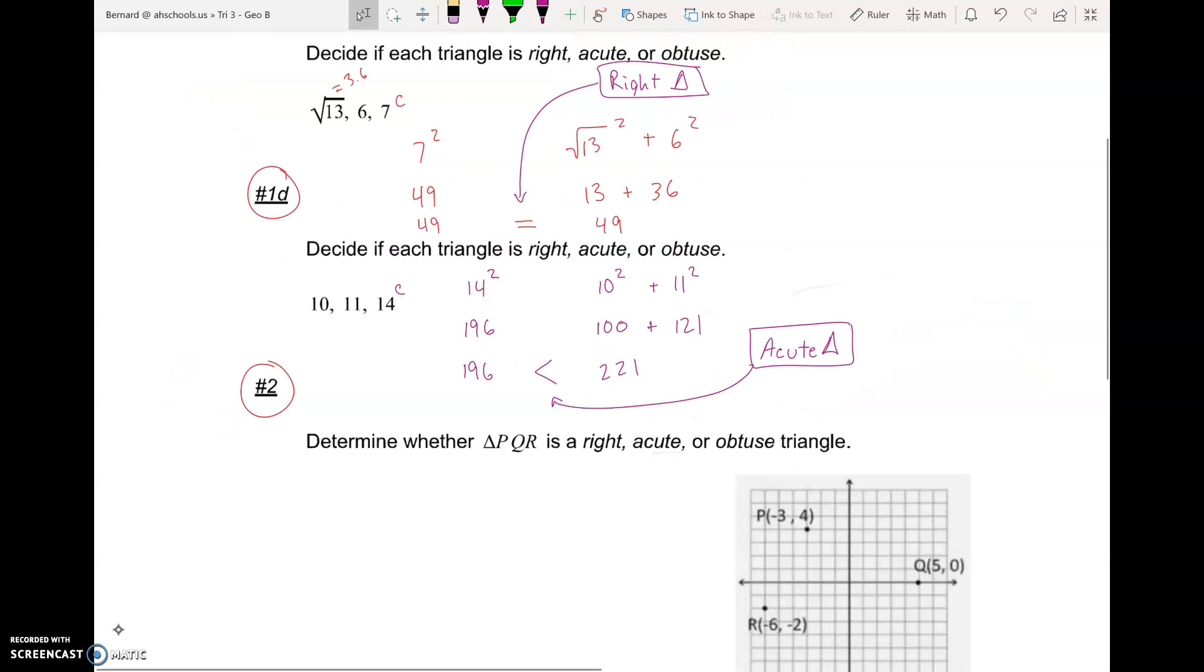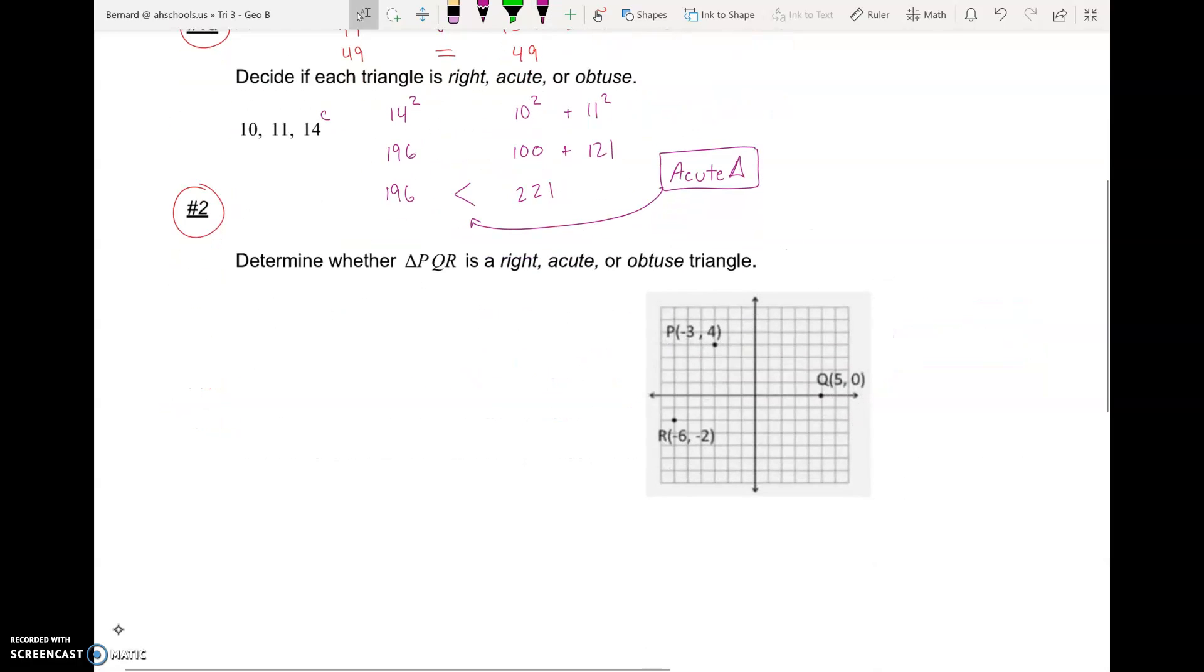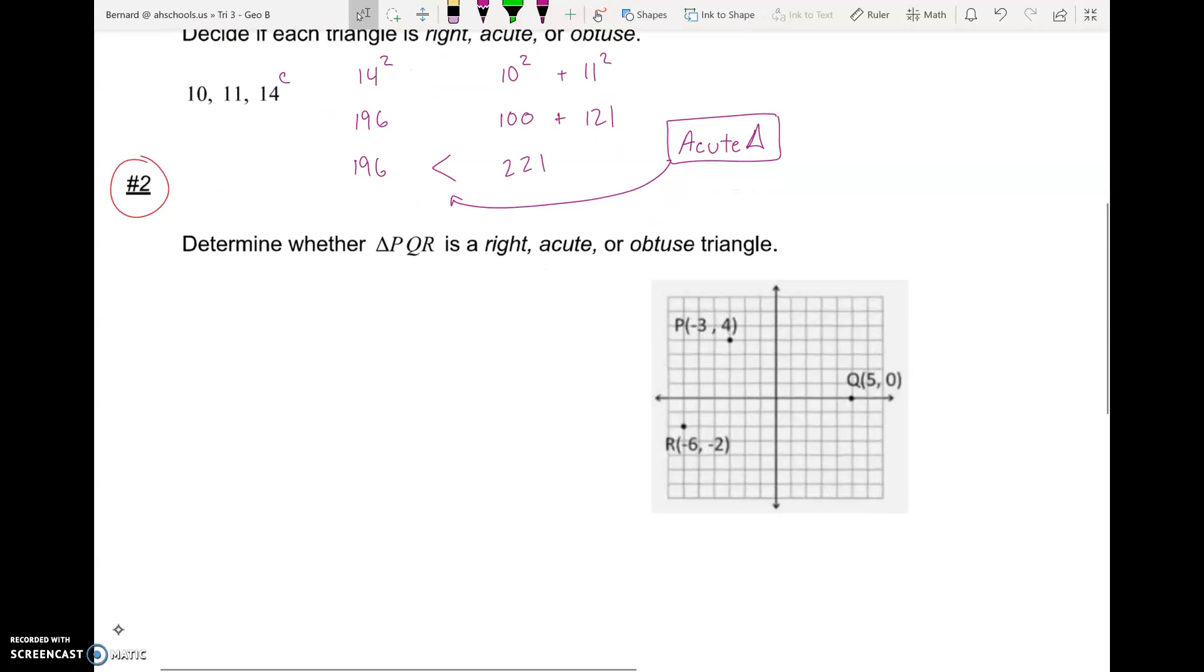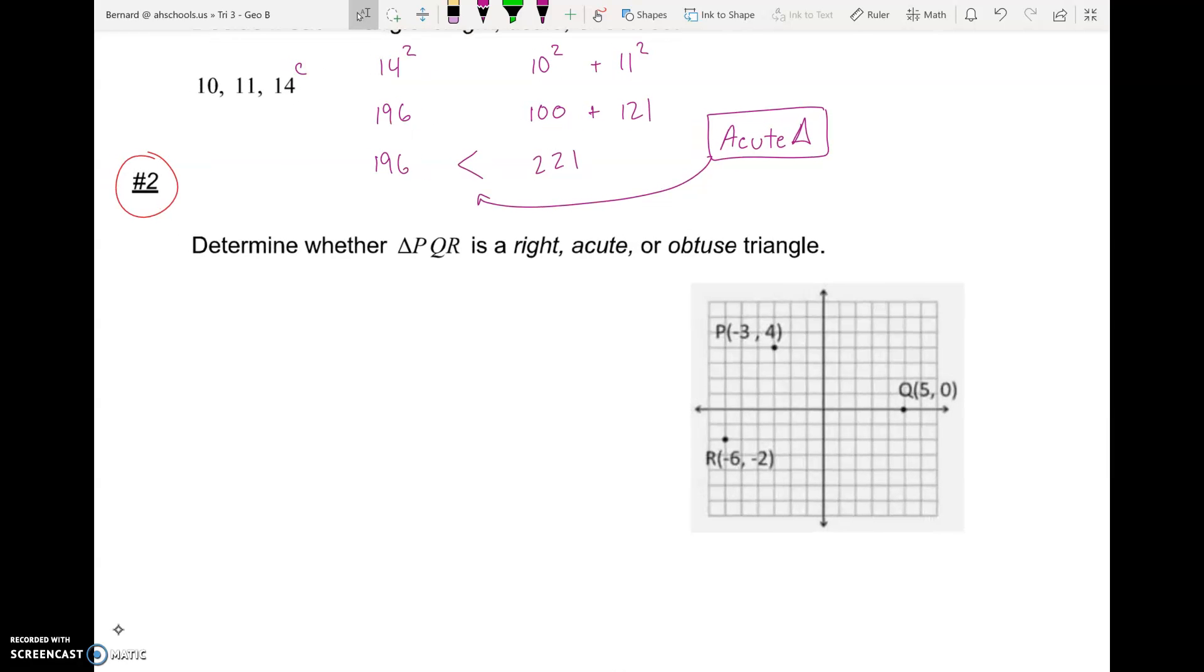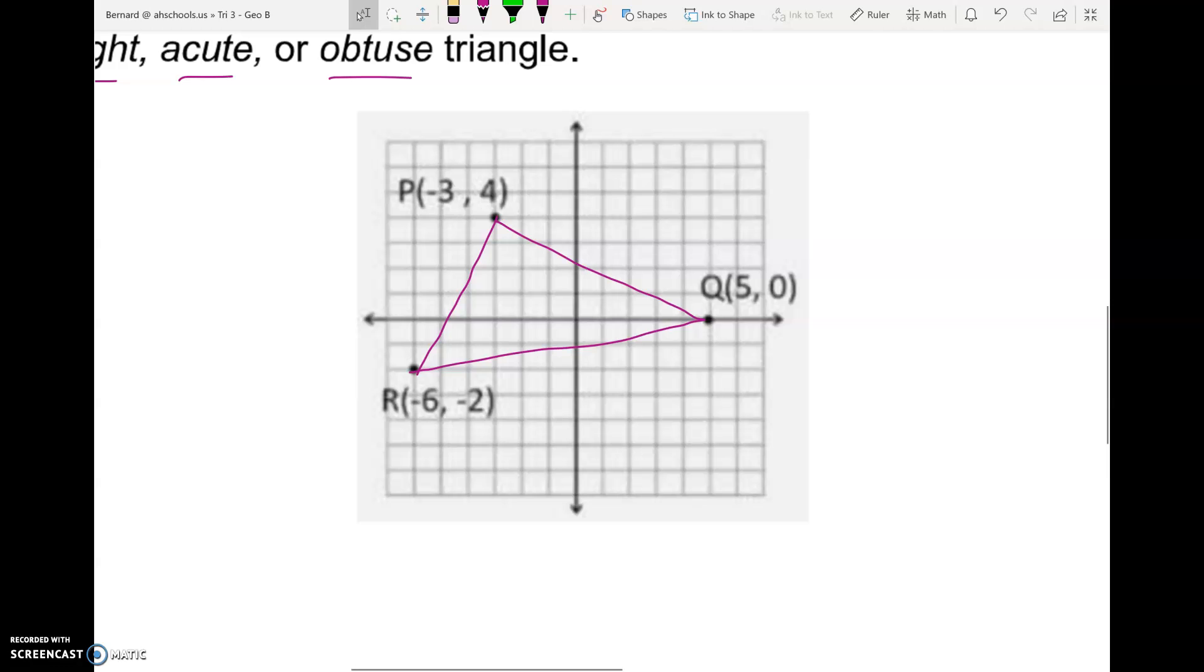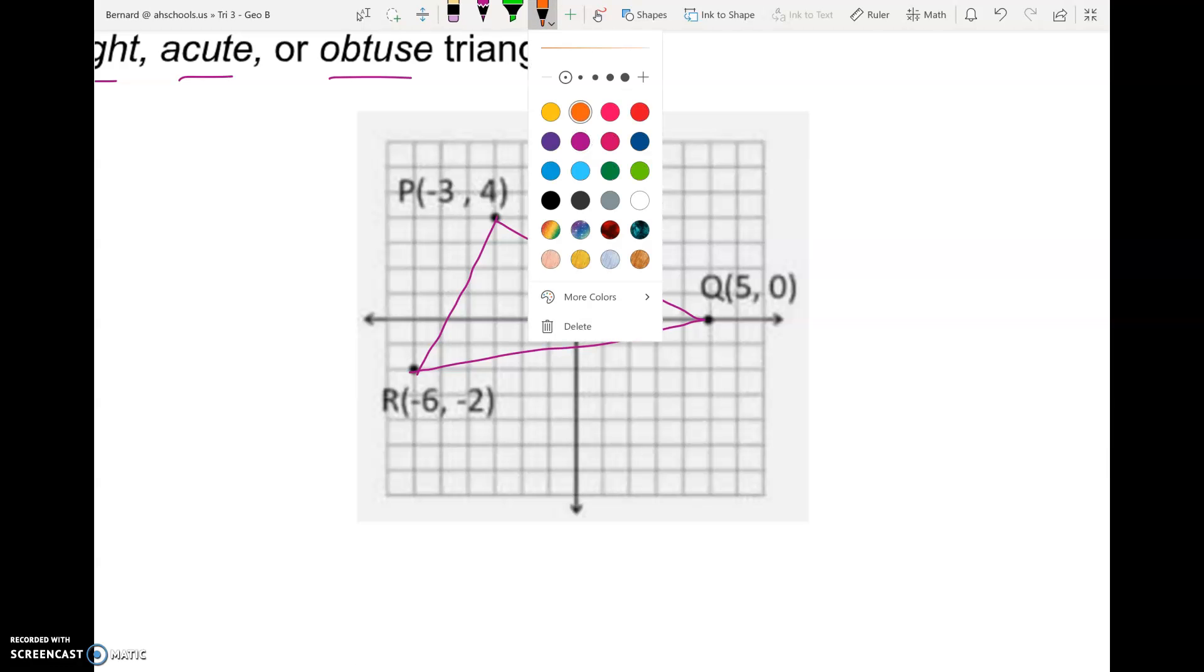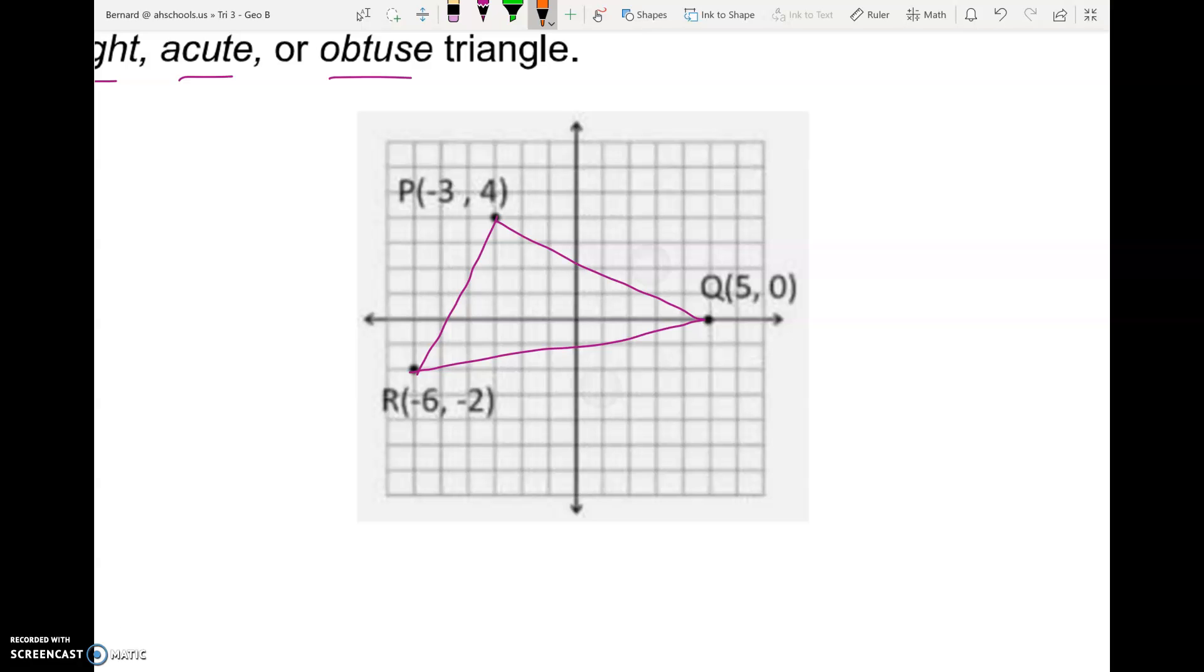Alright, perfect. And so that's the basic idea for all the problems, including number two here. But we just have to do a little bit more work to be able to get our side lengths. We have these dots on our graph over here. And if we connect the dots, since there's three dots, there's going to be three sides giving us a triangle. So if we can figure out how long all three sides are, we can square C and square A and B together and compare and see if it's right, acute, or obtuse. But we don't know the length of the sides.